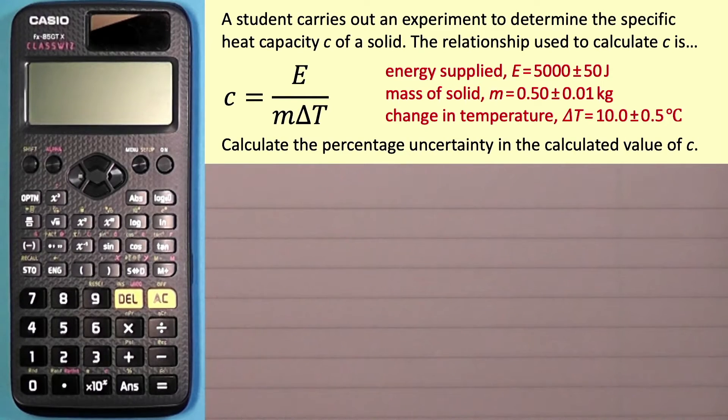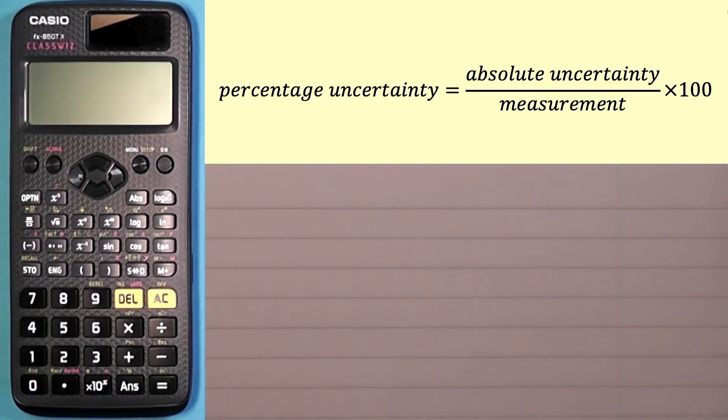Now with some questions we might actually be asked to calculate the value of C. So we would use those values 5000 for E, 0.50 for M and 10.0 for delta T. Those are the actual mean values or the actual measurements. The numbers after the plus minus are uncertainties, whether they're reading uncertainties or random uncertainties, we don't know. How we answer this question is we work out the percentage uncertainty in each of the values: energy, mass, and change in temperature. Whichever one of those is largest, we take that as the uncertainty in C.